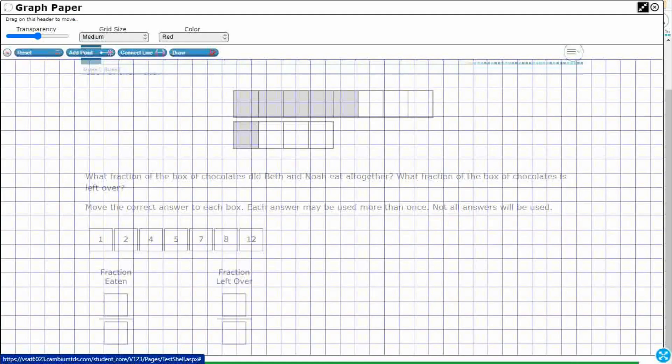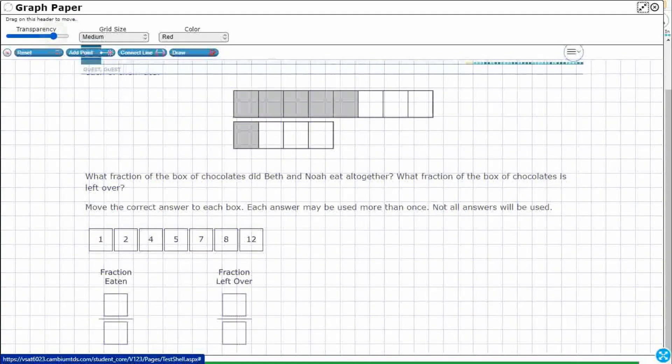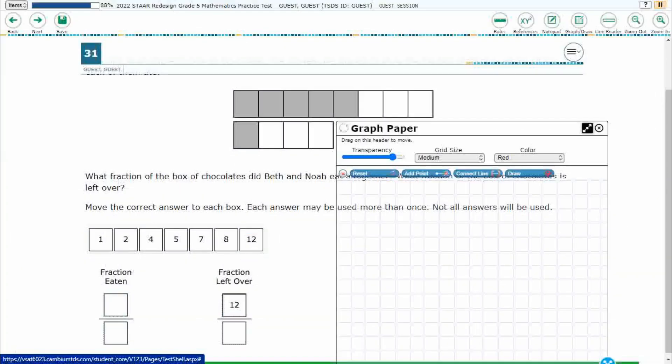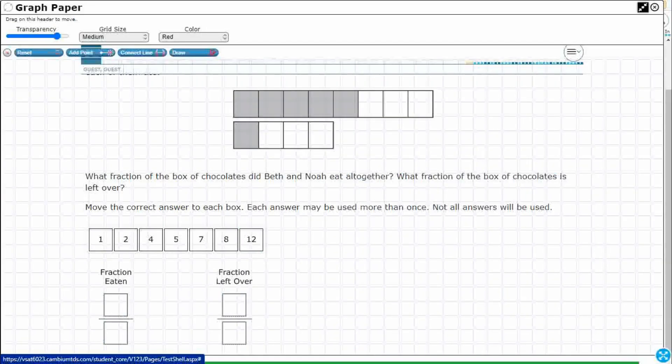Let me open up my graph draw feature. So we need to build a fraction. The fraction eaten and the fraction left over, and it is a drag and drop. So you see these numbers 1, 2, 4, 5, 7, 8, 12. We can move those and drag those into our correct positions, and we can use the same number over and over again if we really want to. Now it's not going to be 12 over 12, 12 over 12, but let's get started.